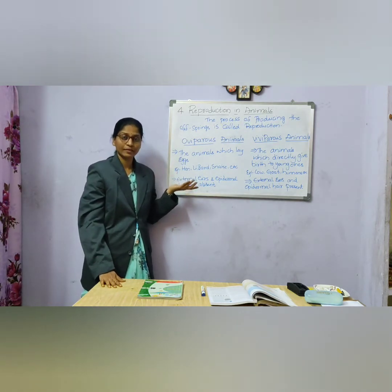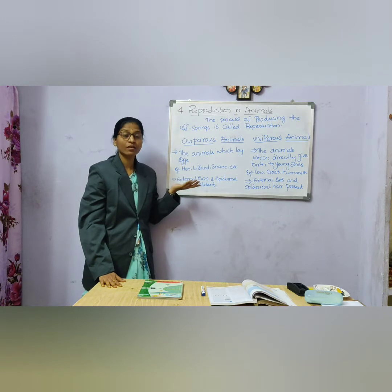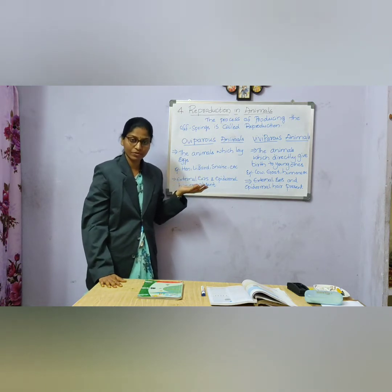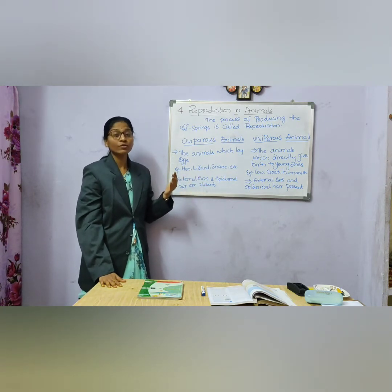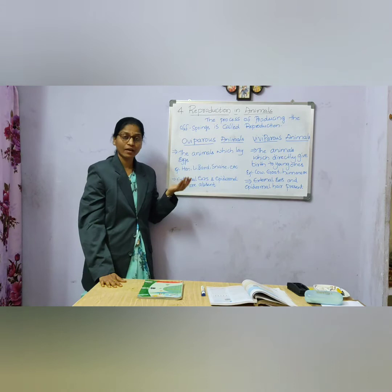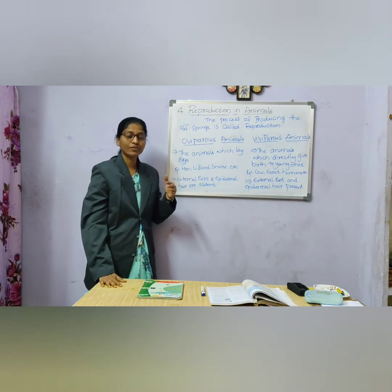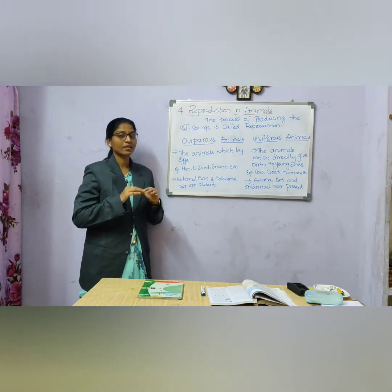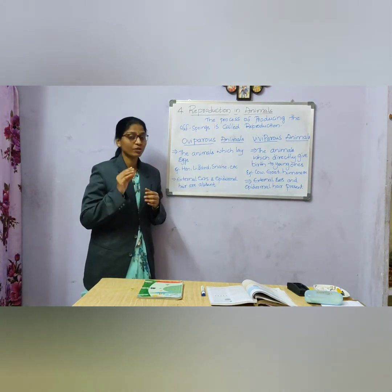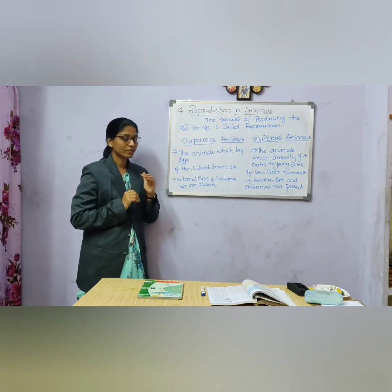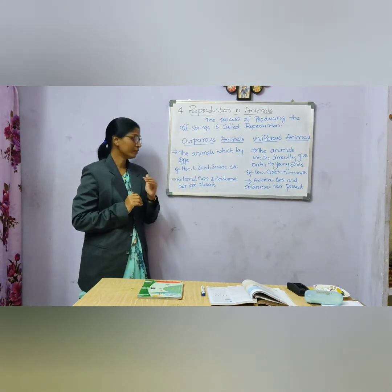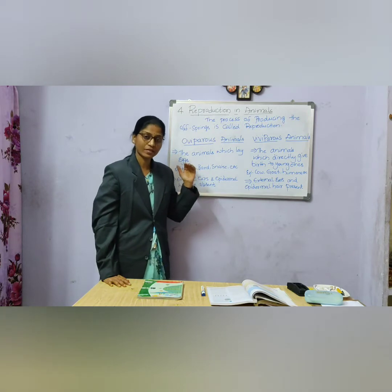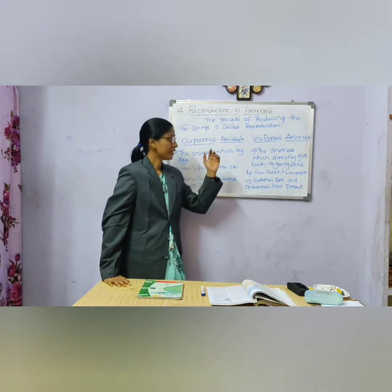Examples of oviparous animals include hen, snake, lizard, and different types of birds — they lay eggs. After that, the eggs hatch and they produce the little ones. This type of animal is called oviparous.